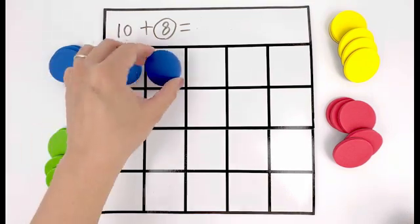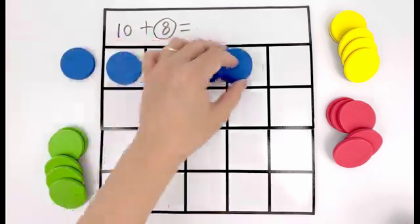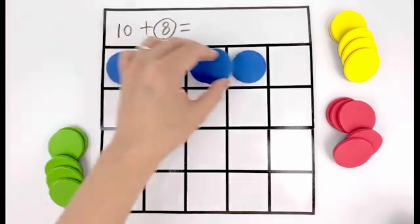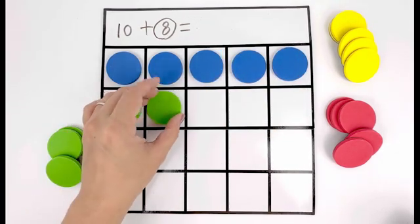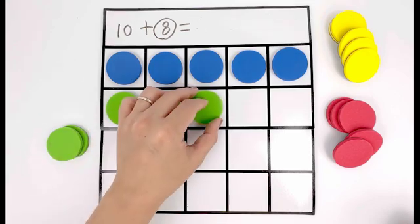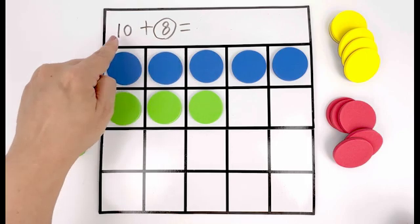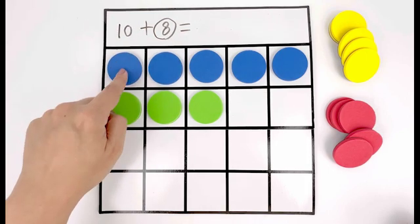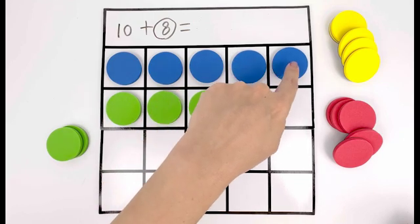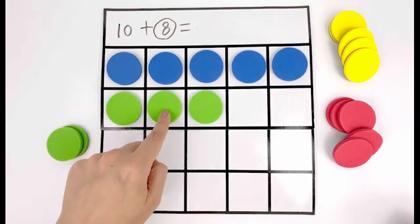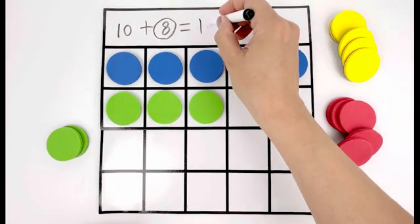One, two, three, four, five, six, seven, eight. Now ten plus eight equals ten, eleven, twelve, thirteen, fourteen, fifteen, sixteen, seventeen, eighteen. It equals eighteen.